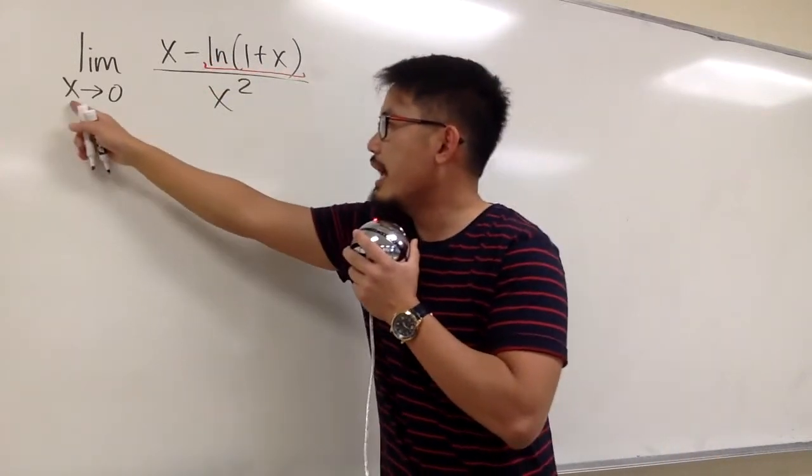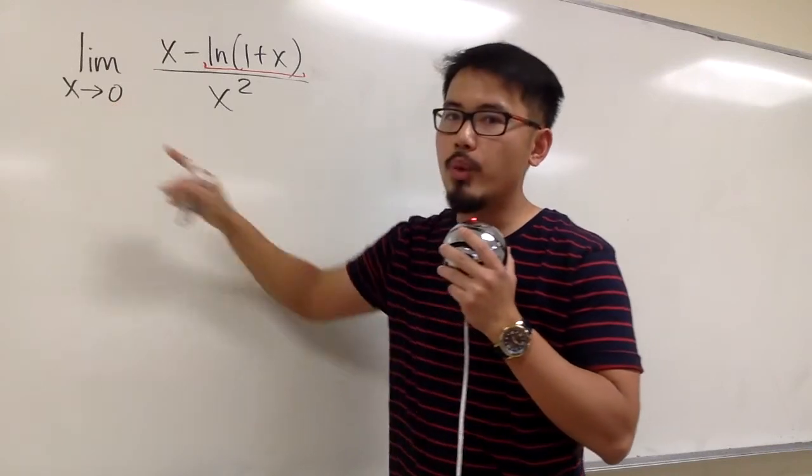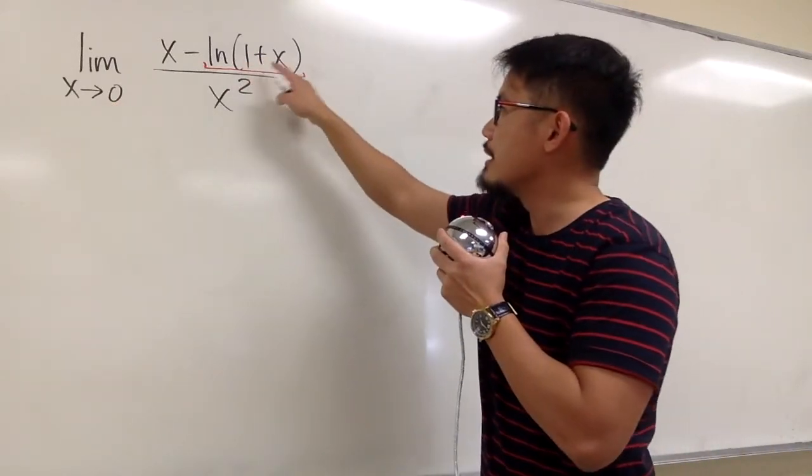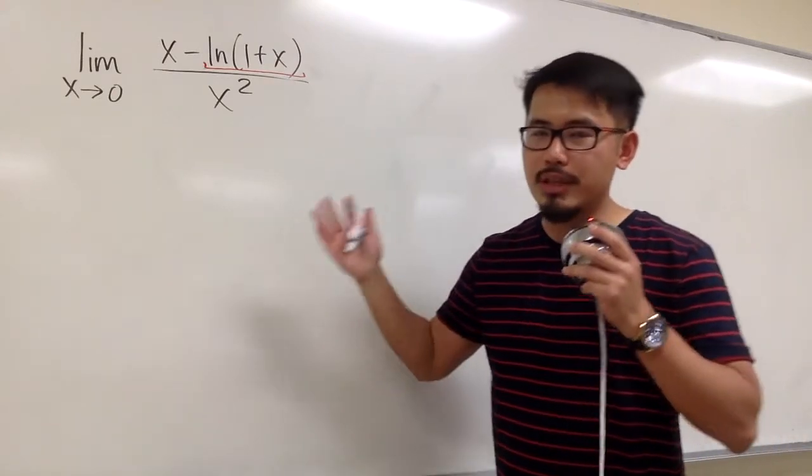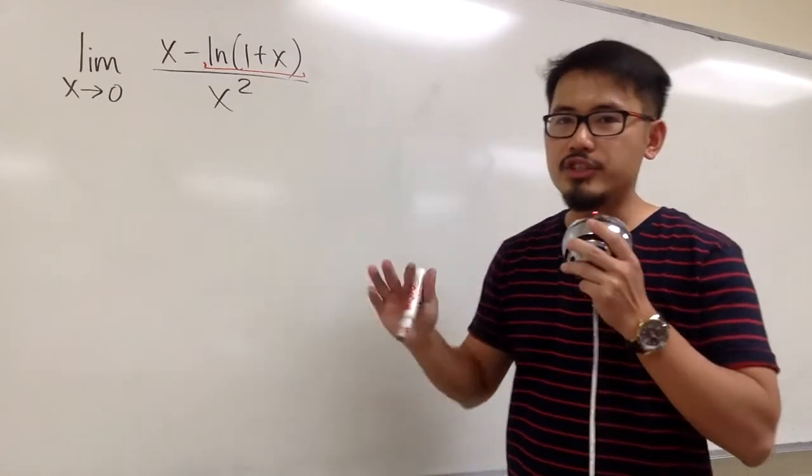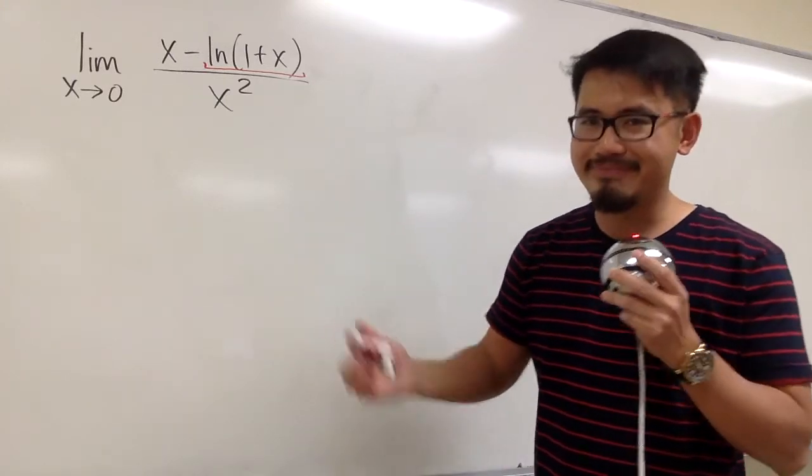However, we do have the power series expansion for ln(1+x). Especially because when x is approaching 0, we'll use the power series expansion for ln(1+x) when the center is 0. I'm just going to tell you what the answer is. You can check out my other video on how we got that answer.